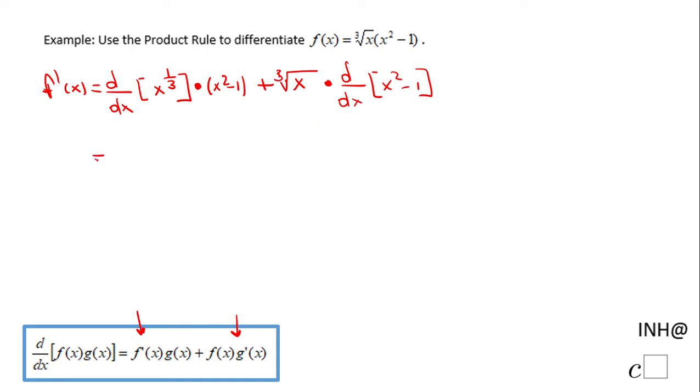So now let's see what we get. Like I said here we're going to use the power rule and we have 1 over 3 x to the 1 over 3 minus 1, that will be negative 2 thirds, times x square minus 1, plus cubic root of x and the derivative of x square minus 1 is just 2x. The only thing here I'm going to do is rearrange these terms and I'm going to